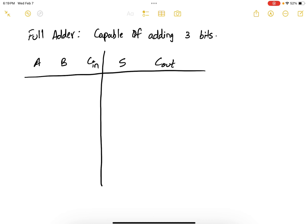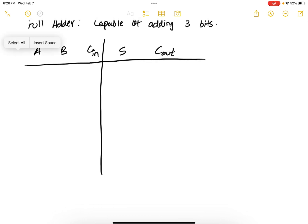So C in is the carry in and C out is the carry out, and the sum bit and two input bits, A and B. Since you have three input bits, combinations are eight in number.